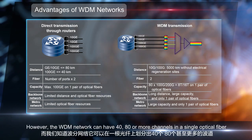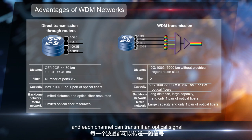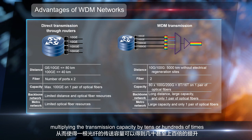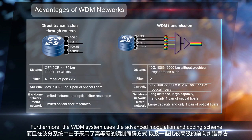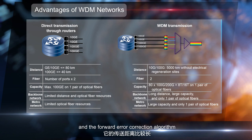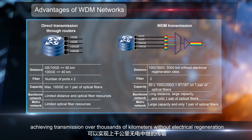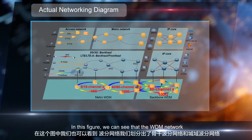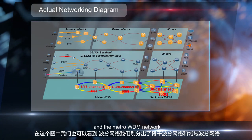However, the WDM network can have 40, 80, or more channels in a single optical fiber, and each channel can transmit an optical signal, multiplying the transmission capacity by tens or hundreds of times. Furthermore, the WDM system uses advanced modulation encoding schemes and forward error correction algorithms, achieving transmission over thousands of kilometers without electrical regeneration, greatly reducing costs. The WDM network can be divided into the backbone WDM network and the metro WDM network.